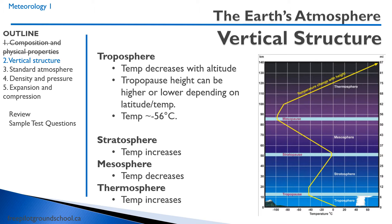In the troposphere, the temperature decreases with altitude. The tropopause — which is the end of the troposphere — can be higher or lower depending on the latitude or temperature. I've seen up in the arctic on cold winter nights, the height of the troposphere can be very low, like 8,000 feet. The temperature at the top of the troposphere always ends up being about minus 56 degrees Celsius.